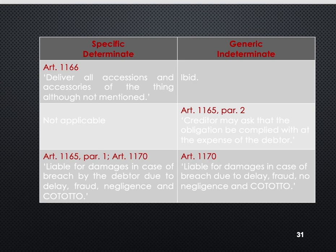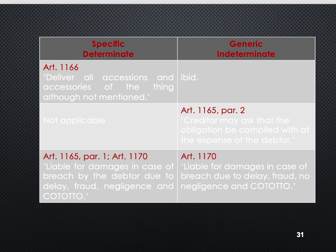In specific determinate obligations, all accessions and accessories of the thing, although not mentioned, are included. For example, if you are selling a second-hand car and that car has bumpers and speakers, since it is a determinate thing and those accessories were part of it at the time the contract was made, you have to deliver the accessions and the accessories as well.